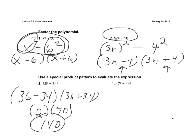And here, we'd have 47 minus 44 times 47 plus 44. So 47 minus 44 is 3, 47 plus 44 is 91, and now we have 3 times 91, which would be 273.